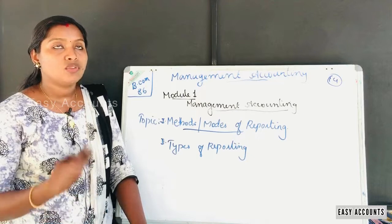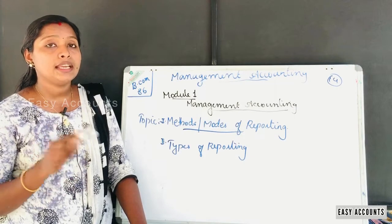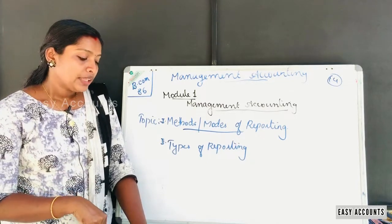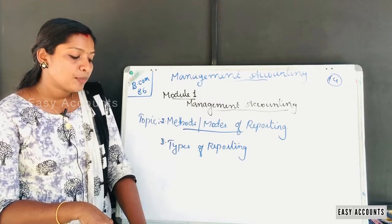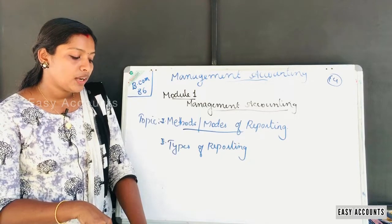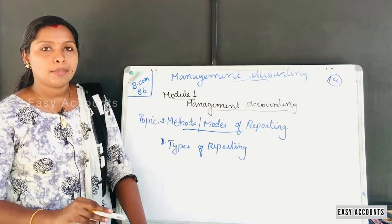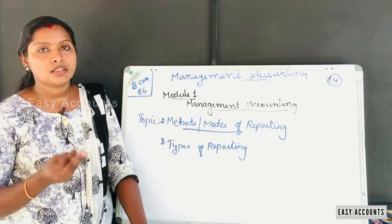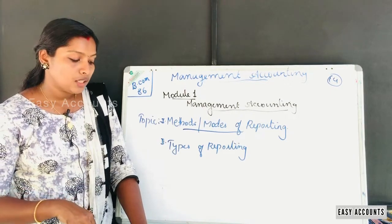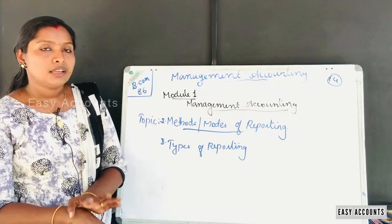Routine reports are prepared daily, weekly, or monthly to cover the business situation. Special reports are prepared whenever there is a special investigation taking place relating to production, marketing, finance, etc. These reports are prepared whenever there are contingencies. If you look at the sales report, there is a special report prepared for specific circumstances.